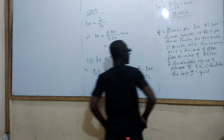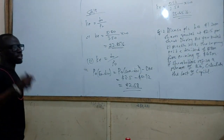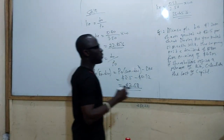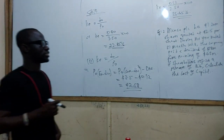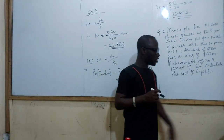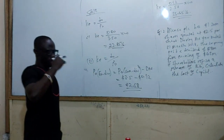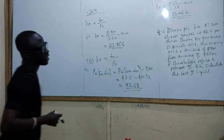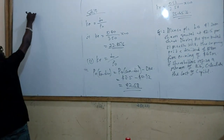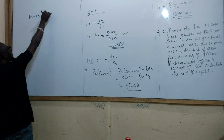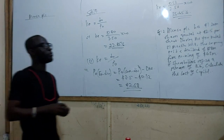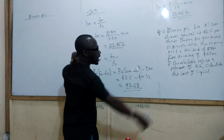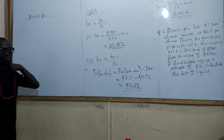Mansa PLC has 1.20 million shares quoted at $2.5 per share. During the year ended 21st March 2018, the company paid a dividend of $18 million from earnings of $63 million. If shareholders require a return of 8%, calculate the cost of capital. Which formula do we use — the constant formula or the growth formula?